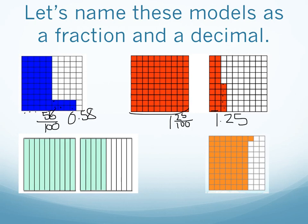This third model is cut into tenths. I see one whole and then five tenths, for one and five tenths, or one point five.